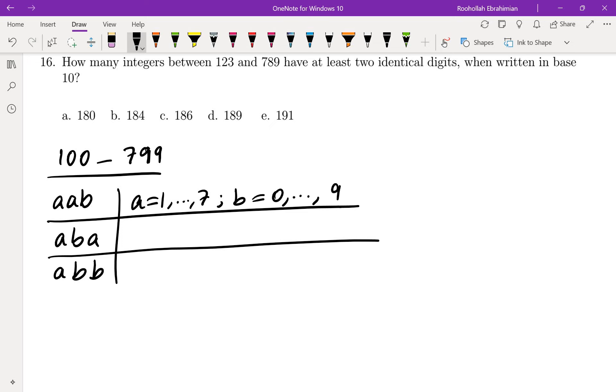So the total here would be, and I'm going to write down the number here, the total here would be 7 possibilities for a, 10 possibilities for b, so that would be 70 possibilities.